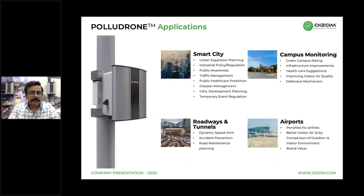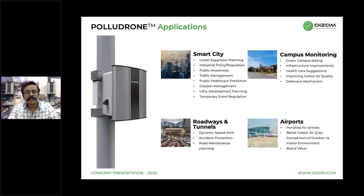Today, smart city has become the core of all urban development. Oizom's Pollutron has been monitoring data in almost 11 such smart cities. Besides this, Pollutron has also been used for monitoring campuses to improve the overall air quality residents breathe. Critical applications like roadside and tunnel monitoring have also surfaced with availability of such low-cost pollution monitors. Even airports have had initiatives for monitoring emissions by airplanes and their effects on travelers.